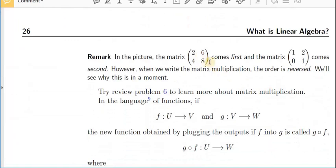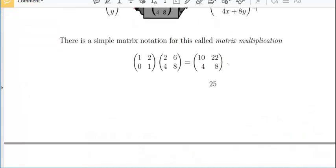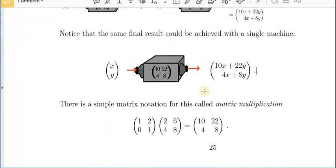All right. So in the picture, 2, 6, 4, 8 comes first. And 1, 2, 0, 1 comes second. However, when we do the matrix multiplication, we put the 2, 6, 4, 8 second and the 1, 2, 0, 1 first. And we'll see why we do that in a moment. So let me reemphasize that point.